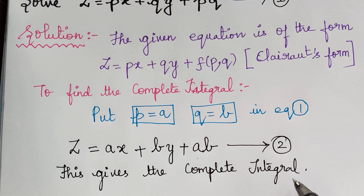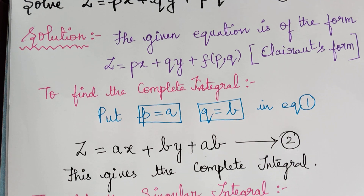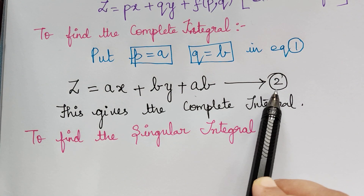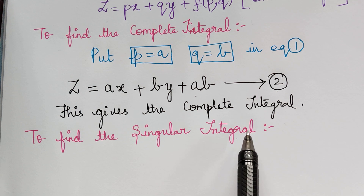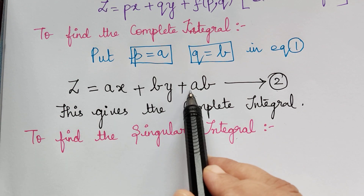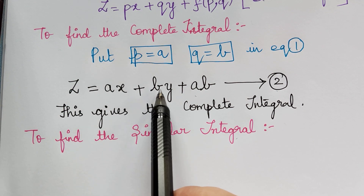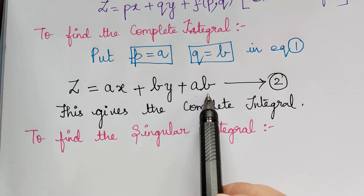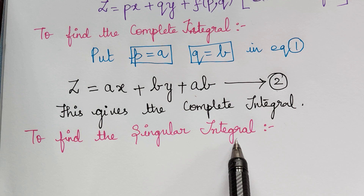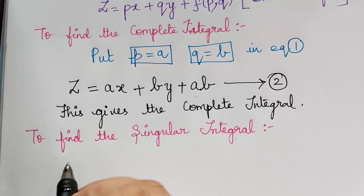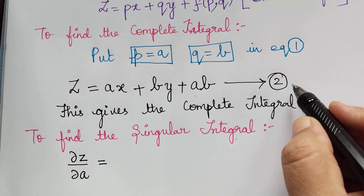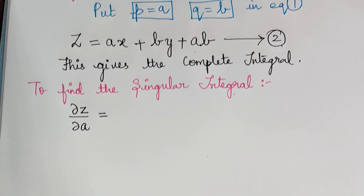Now after finding the complete integral, we have to find the singular integral. To find the singular integral, we have to eliminate the arbitrary constants from equation 2. The arbitrary constants in equation 2 are a and b. We have to eliminate them, so first we have to find ∂z/∂a — that is, partially differentiate equation 2 with respect to a.